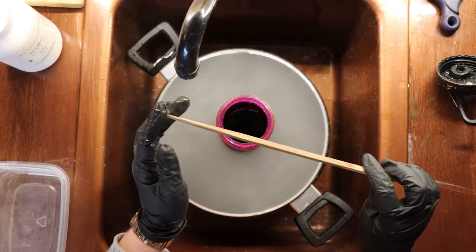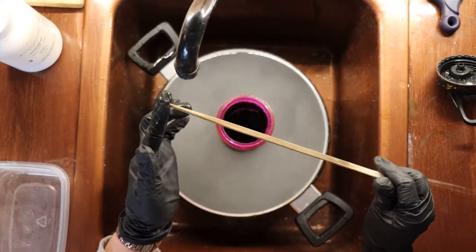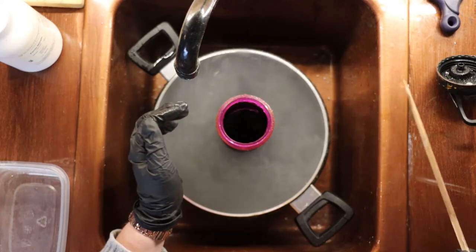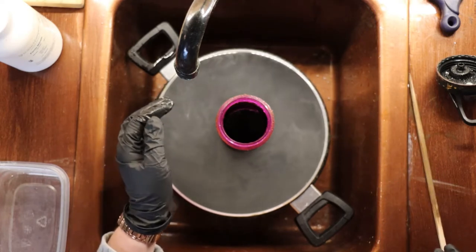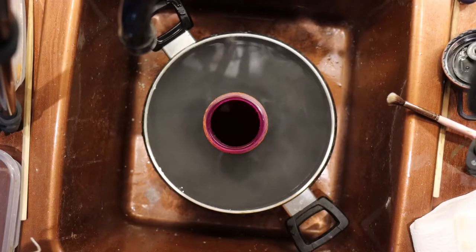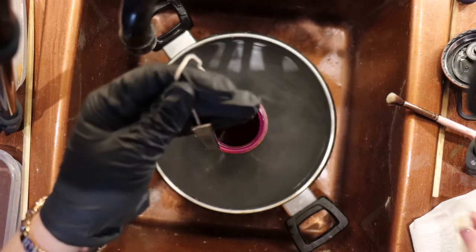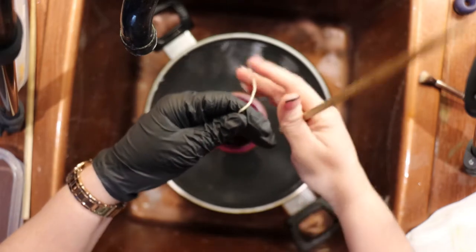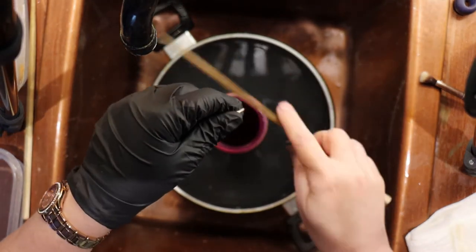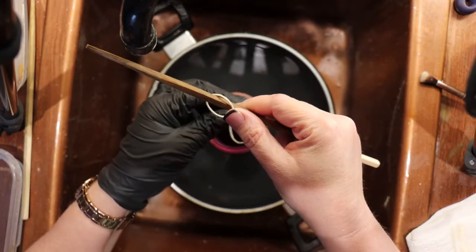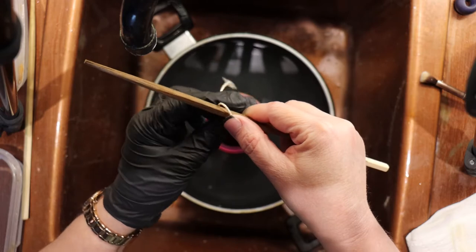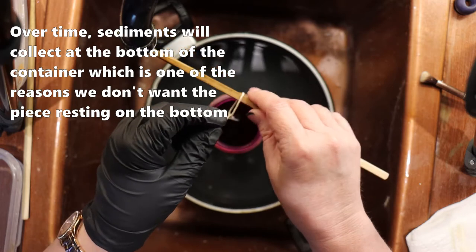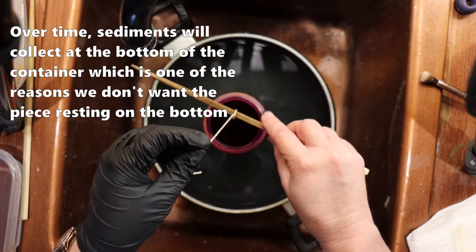I mentioned that I suspend my pieces. I typically just use a wooden chopstick to suspend my pieces into the solution. Now we will just wait for this to warm up. This is the piece that we applied the resist to in the previous video. We just want to suspend the piece into the ferric nitrate solution. And we can do that using the chopstick. We don't want the piece to touch the bottom of the container.